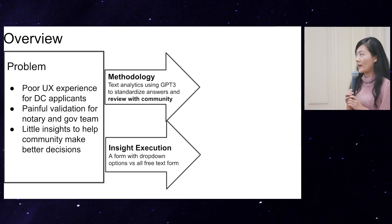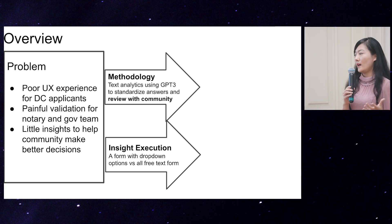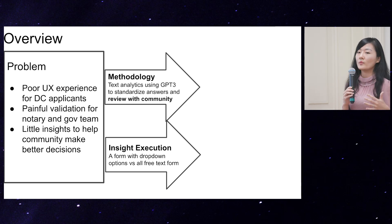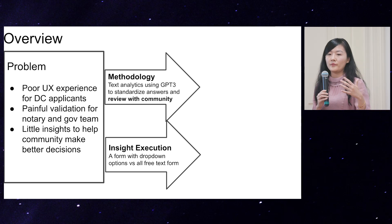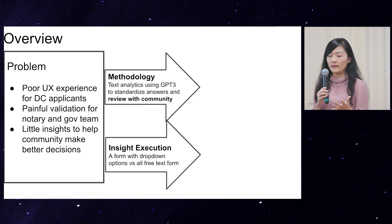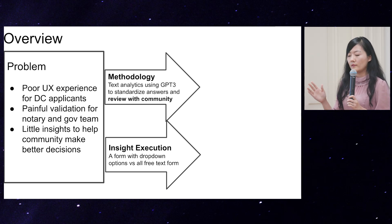After these processes, we can synthesize some data and get insights. Eventually we want to deploy a form with dropdowns with standardized answers, and also give people an exception option. For example, if your answer doesn't fall into the categories, you can write your exact answer. That way, notaries can still have the rich information they need to validate the client.